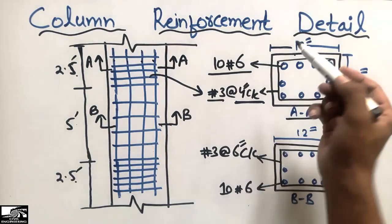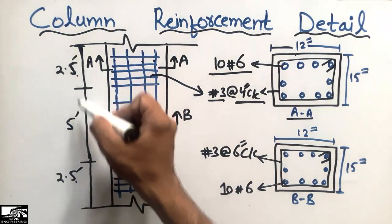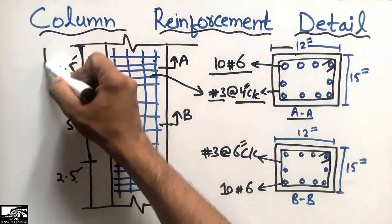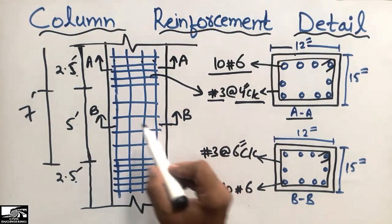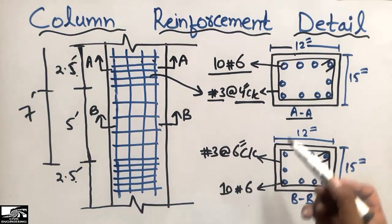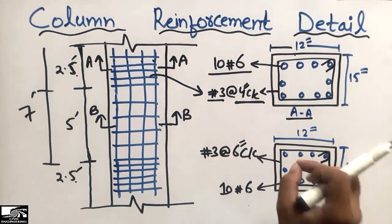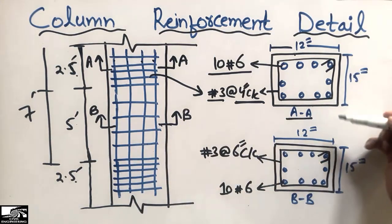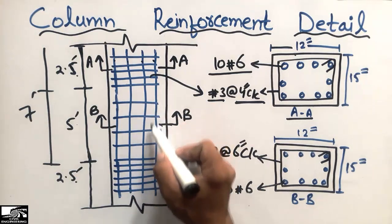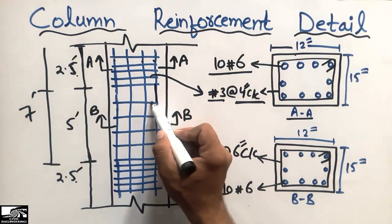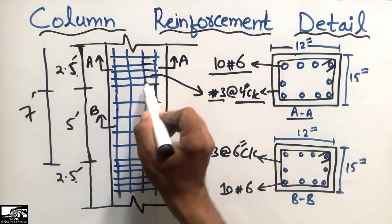Coming to section B: section B covers the distance from the 2.5-foot mark onward up to about 7 feet — from here to here. Section B is provided because it has different detailing from section A. In section BB, the ties have more spacing — a greater center-to-center distance between the two ties compared to section A, where they are more closely spaced.